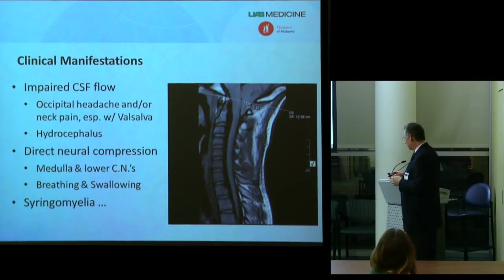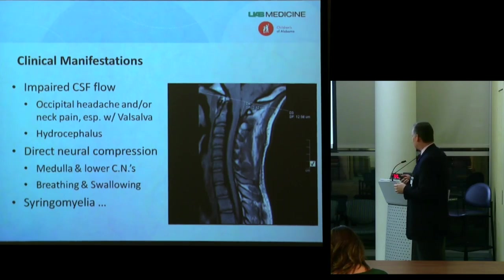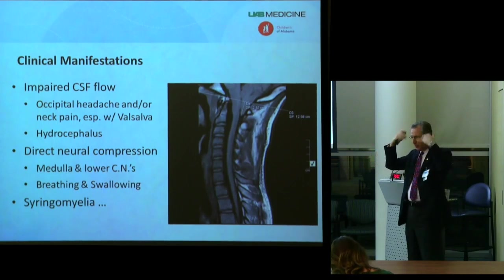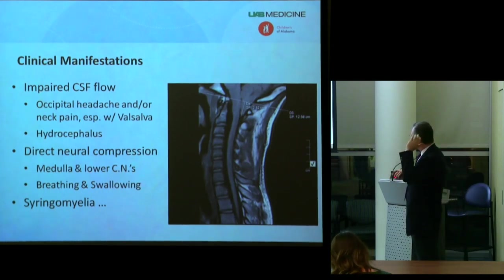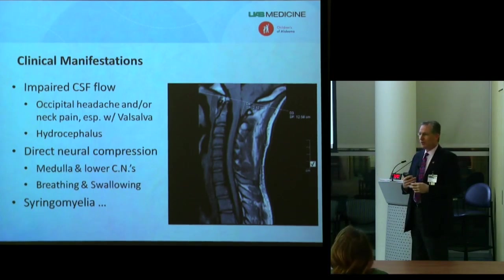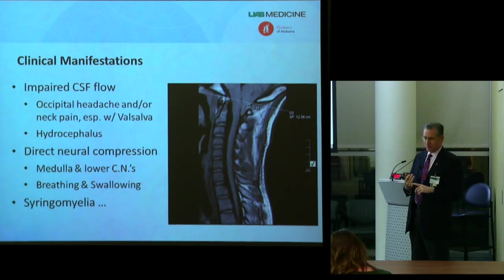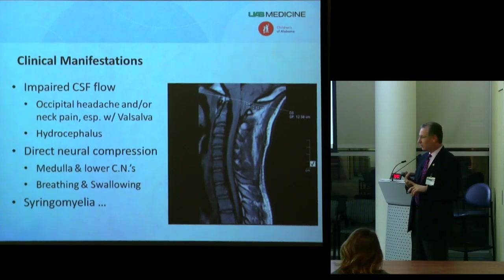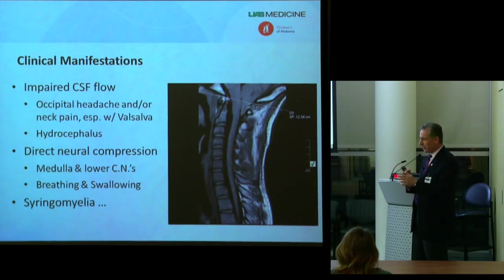There are three general mechanisms by which Chiari malformations cause symptoms. First is impairment of spinal fluid flow back and forth between the cranial compartment and the spinal canal because of this cork-in-the-wine-bottle phenomenon. That typically manifests as pain in the back of the head or top of the neck, often brought on by something that causes a pressure fluctuation — what in medical terms we call a Valsalva maneuver: a cough, a sneeze, or exertion such as jumping on a trampoline or athletics.